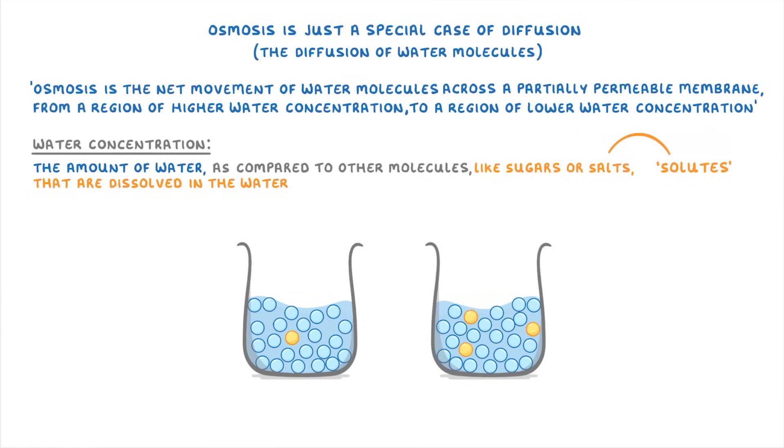If we then add one particle of solute to the left beaker, and three particles of solute to the right beaker, then the beaker on the right will have a higher concentration of solutes than the one on the left, because it has more solute molecules. And this means that it must also have a lower concentration of water, because it has less water molecules per molecule of solutes.